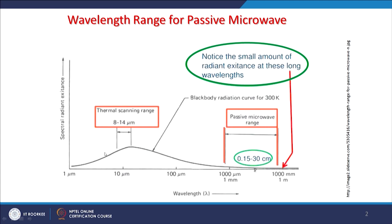Looking at the spectral radiance excitance diagram, we can see that the thermal microwave region and the passive microwave region (0.15 to 30 centimeter) are distinct. The blackbody radiation curve for this region is also shown. We can see that passive microwave signals can be recorded by satellites, though the energy is very small in amount and it is at long wavelengths.